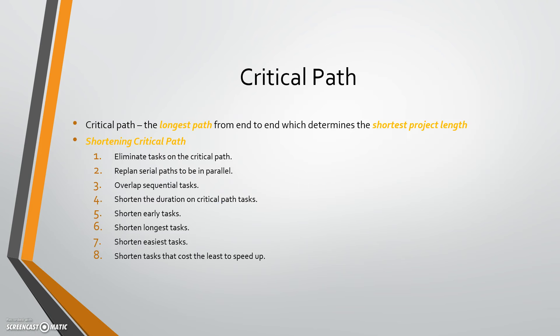From these project schedules we create what they call a critical path. A critical path is basically the longest path from end to end of one of these schedules, or work breakdown structures, that determines the shortest project length — how quickly can we get from beginning to end while still accomplishing all the goals. That's how I define critical path.